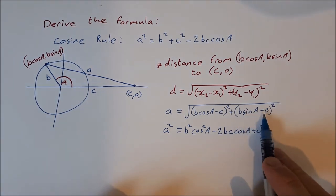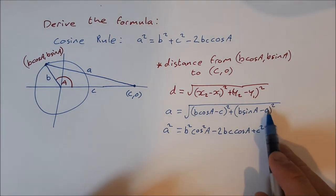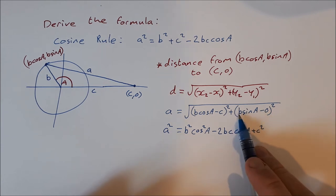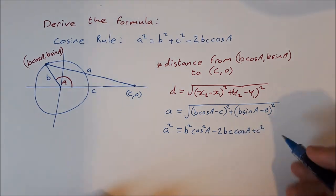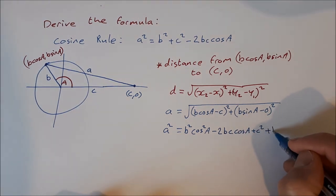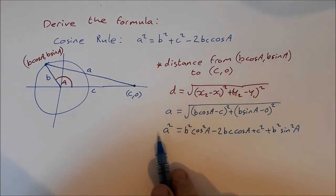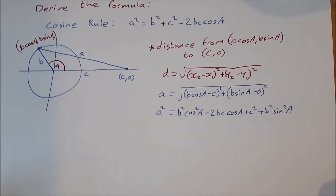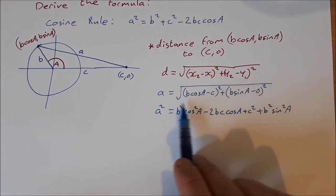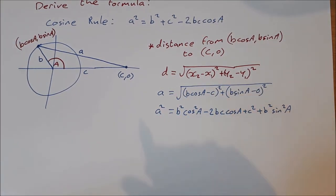Then over here I have b sin A minus 0, so that's just b sin A, and I'm going to square it, so that's plus b squared sin squared A. So a lot of things in that step there, squaring both sides and squaring out the brackets as well.